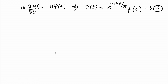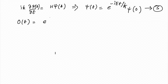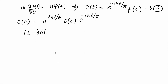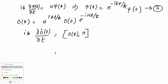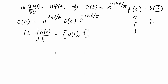In the Heisenberg representation, any operator O is given by O(t) = e^{iHt/ℏ} O(0) e^{−iHt/ℏ}, where H is the Hamiltonian. The equation of motion for the operator is dO/dt = [O(t), H]. These are the equations of motion in the Heisenberg picture.